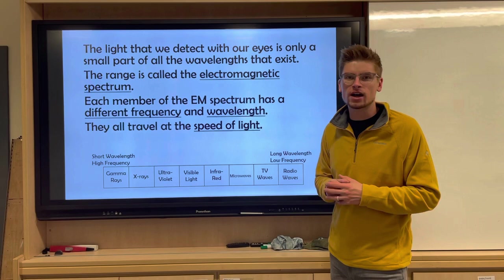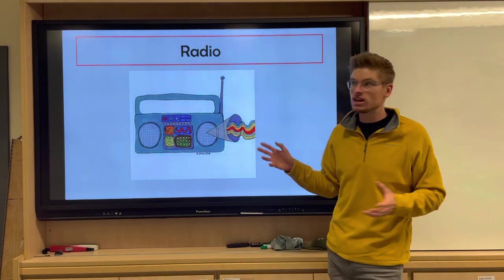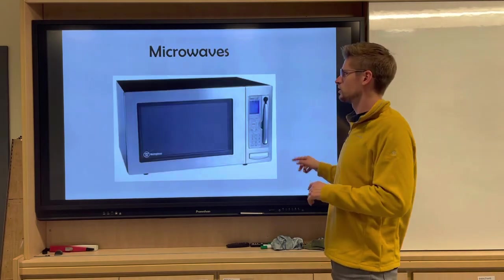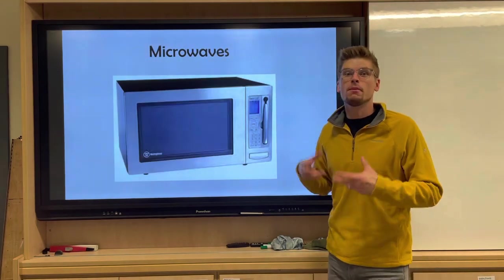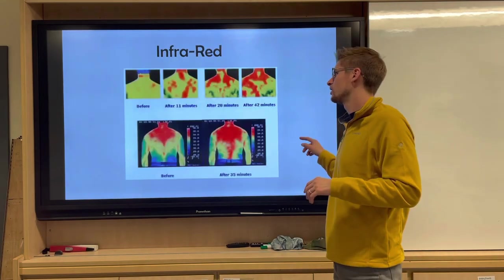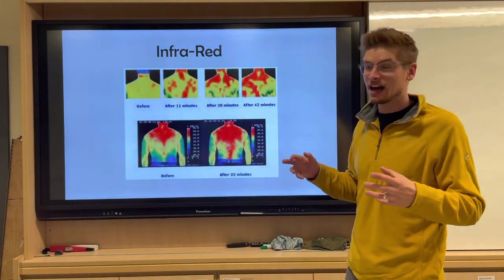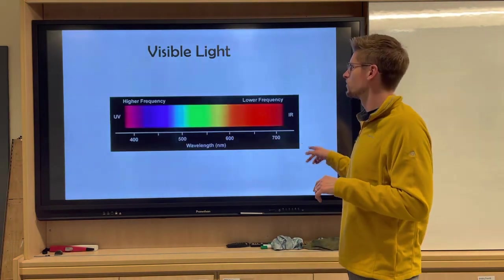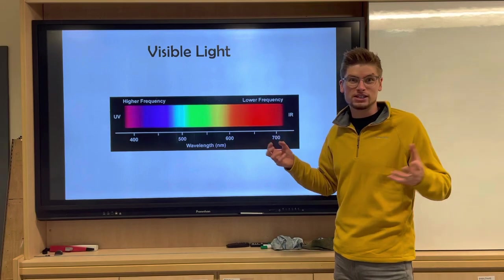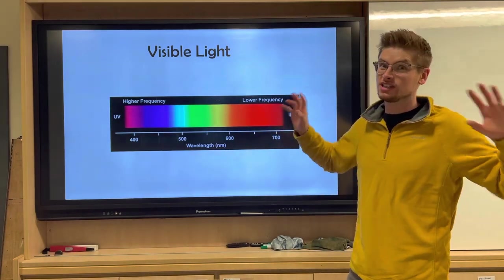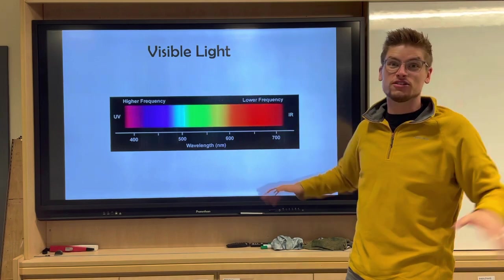Some examples: radios use radio waves. Microwaves use microwaves to cook your food—they concentrate the microwave in there. Infrared cameras show the heat of something—that is infrared radiation. Visible light—well that's what we see, the reds, the blues, the greens. That's everything we see is visible light. We cannot see anything else other than visible light.